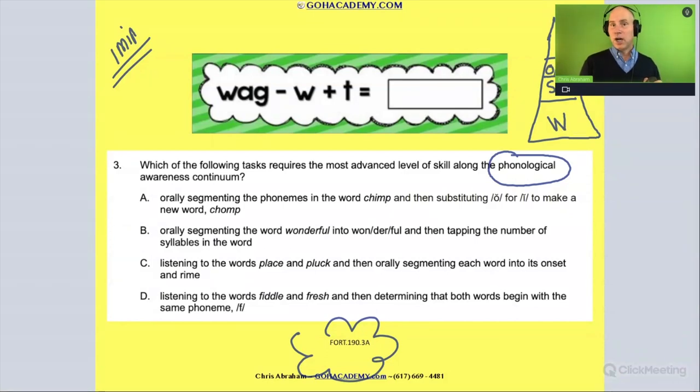But we think about this continuum as having four levels. Write up those levels on a sheet of paper. You know them. We said them a lot. Word, syllable, onset rhyme, and phoneme level. And we know that we're looking for the most advanced skill. So we already know that it's going to be that top one. We already know that the activity that we're looking for is going to be that top activity.